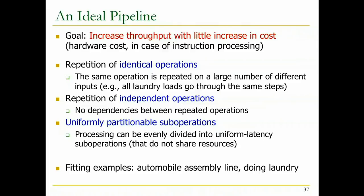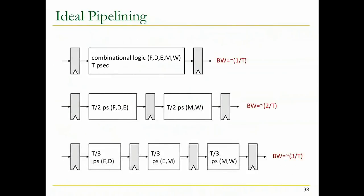The laundry example is an ideal pipeline; automobile assembly is not sure; and clearly the instruction processing cycle is not an ideal pipeline. Looking at the lower-level view: this is a single cycle machine where we execute different portions of the instruction processing within a cycle - let's call it T picoseconds. Your throughput is 1/T in this case. If we have two pipeline stages and partition them ideally, we'd like bandwidth to be 2/T, and with three stages, 3/T.